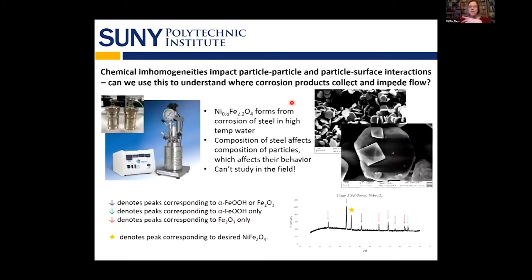The last project I wanted to tell you about is looking at nickel ferrite particles that form naturally as a corrosion product in steel water flow systems. They tend to collect in unfortunate locations and cause abrasion and wear of those parts, but we can't study them in their natural environment. So we're making them in our lab with a fairly standard hydrothermal reactor. We're looking at the size and shape of the particles because that will control how they agglomerate and collect and impede flow. On the right, you see micrographs showing little hexagonal particles versus little octagons that grow, and we have some X-ray diffraction to prove we're making what we wanted to make.